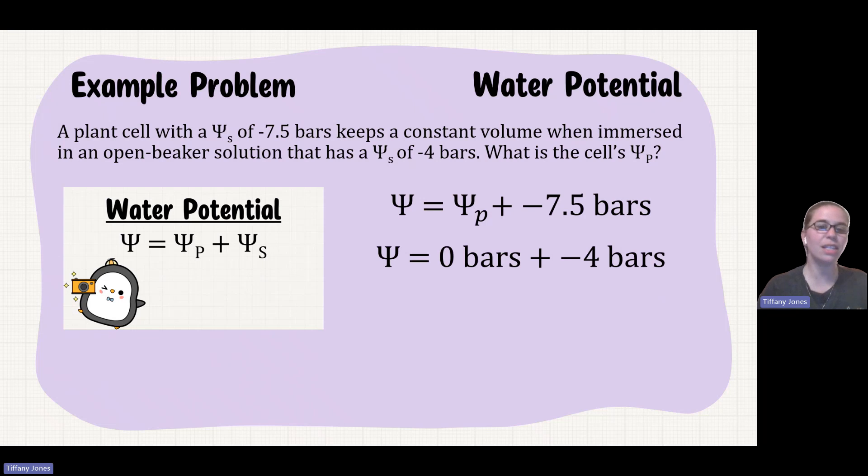And so since it's an open beaker, there's going to be no pressure potential. So my water potential is equal to zero bars plus negative 4 bars because the negative 4 bars is my solute potential that I was already given. That tells me that since it's not going to gain water, these two formulas are going to be equal to each other because this water potential should be the exact same. So that tells me that I have my negative 4 bars is going to be equal to my pressure potential plus the negative 7.5 bars.